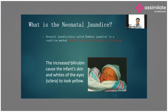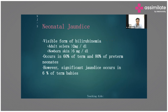As jaundice comes down, the severity of bilirubin levels are increasing accordingly. This is the first sign we identify — jaundice in the sclera, the white part of the eye. The definition of jaundice means that the serum bilirubin — whether direct or indirect — is increased in the blood.